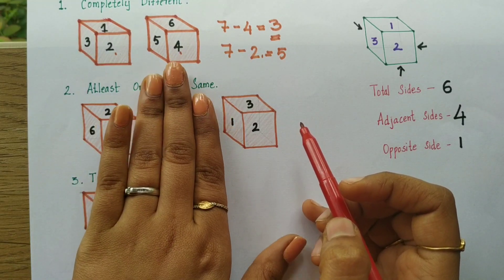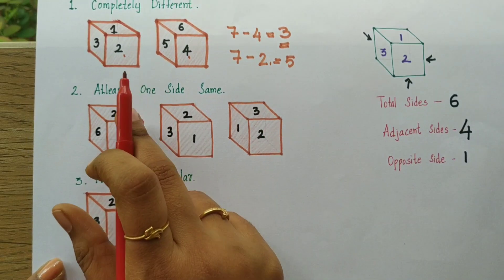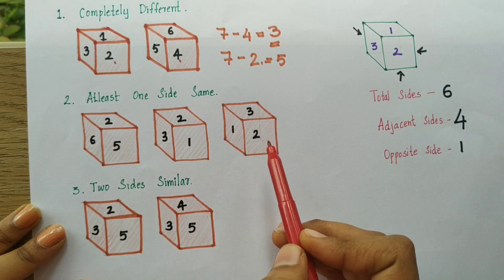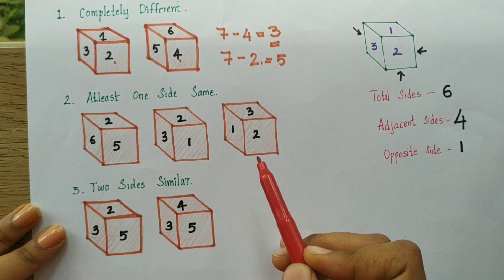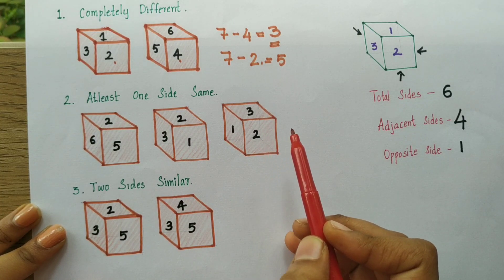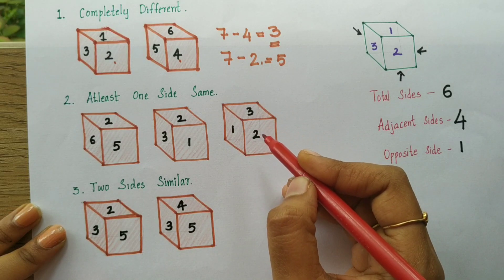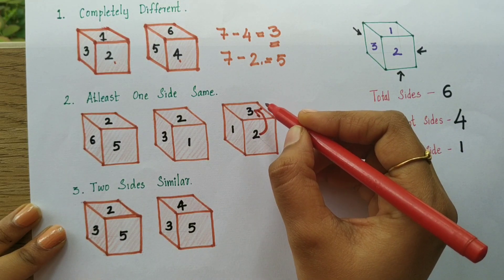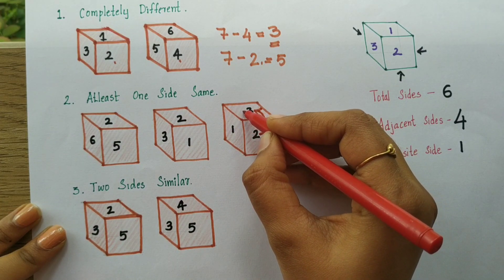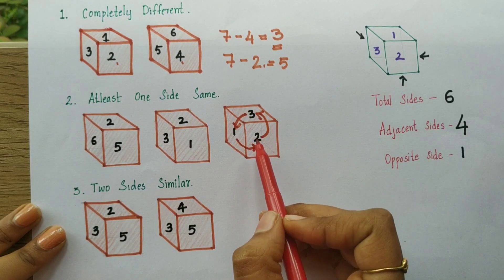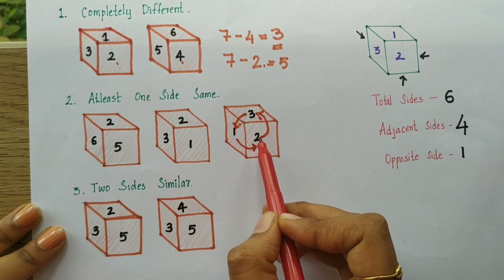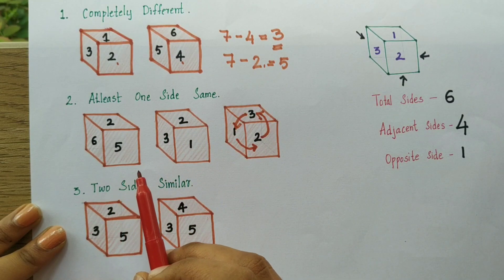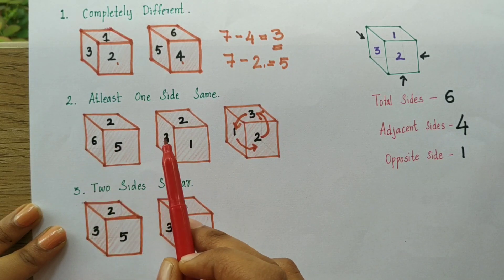If the matching number is not already on the same side, we have two here on this side and two on this side in different positions. We need to bring that two to the same position by moving the numbers in a clockwise or anti-clockwise direction. Moving anti-clockwise, two comes here, and all other numbers move in the same direction accordingly — one comes here and three comes here. Now the cube matches, so we know: opposite of five is one, and opposite of six is three.